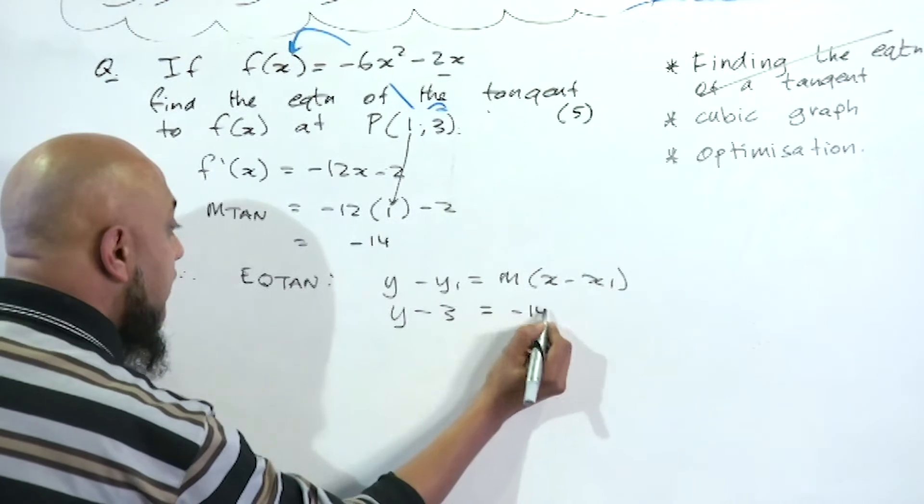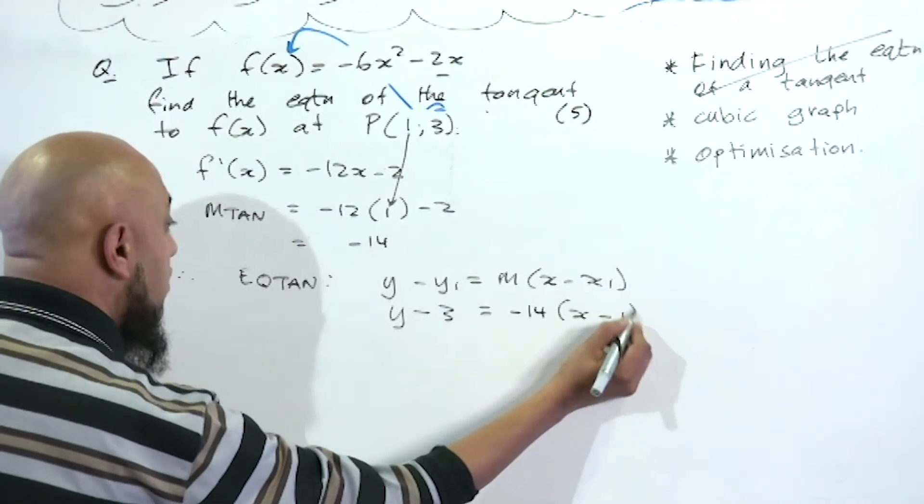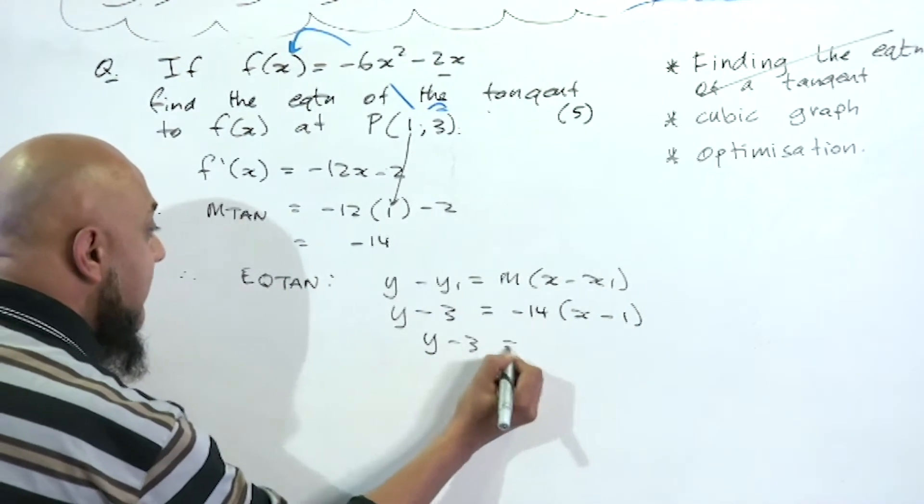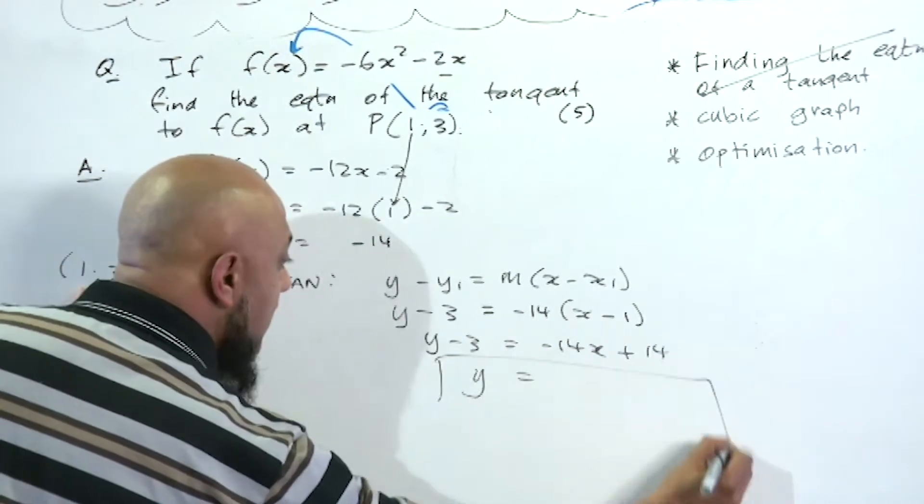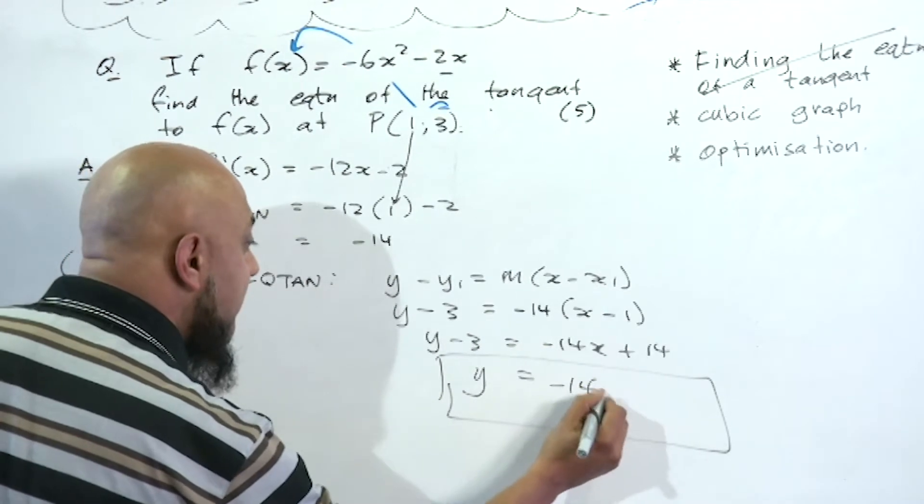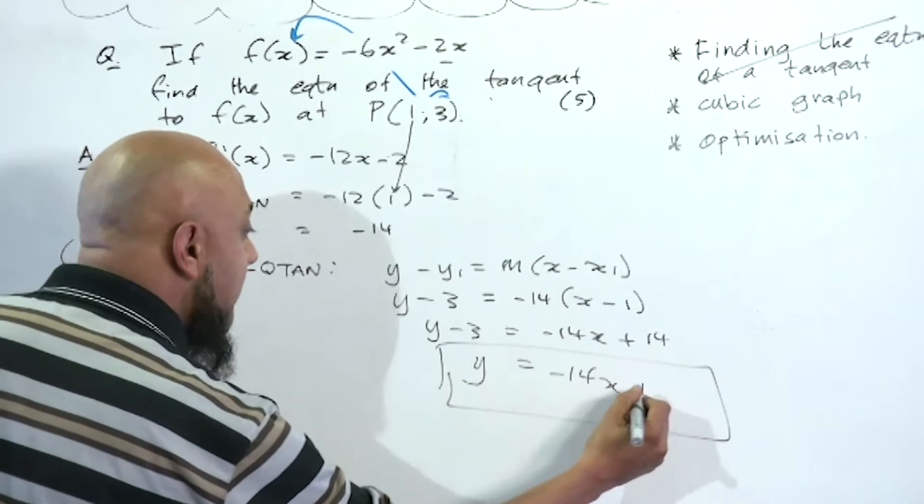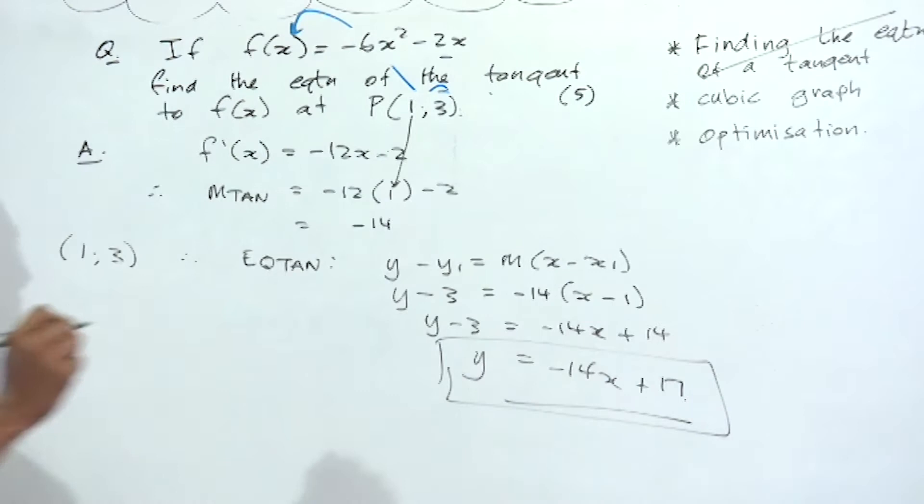So y - 3 = -14x + 14. Final answer: y = -14x + 14 + 3, which is y = -14x + 17.